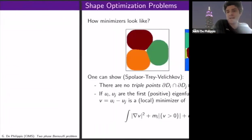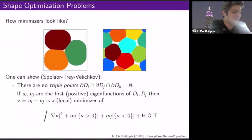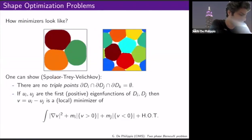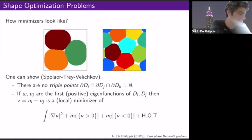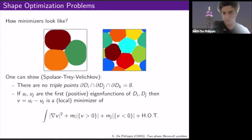The question is how minimizers look. Running numerical simulations, you see features like: the domains don't want to be a full partition — there are empty regions — and they seem to only want to touch two by two, with no triple or higher multiplicity points. This is due to the presence of the measure constraint. Without the measure term, you would see triple points.